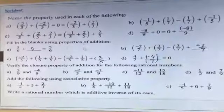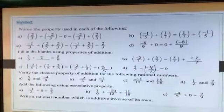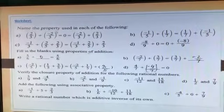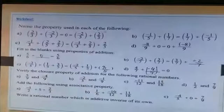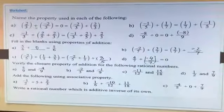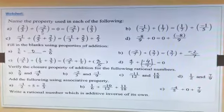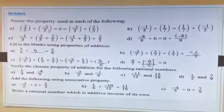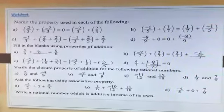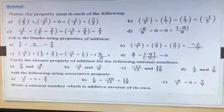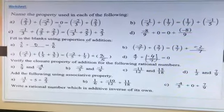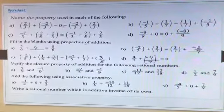Now the exercise — a worksheet is given to you. Listen carefully. Name the property used in each of the following. First: 2 by 3 plus minus 2 by 3. I think you can identify it — this is additive inverse. What we are adding here is the inverse number, so the answer will be 0. This is the additive inverse property.